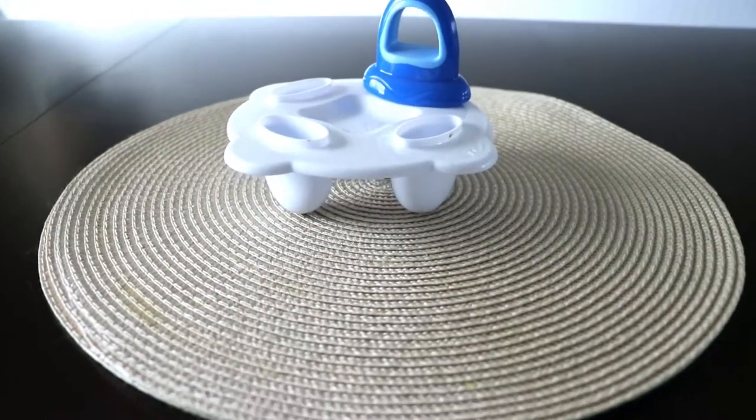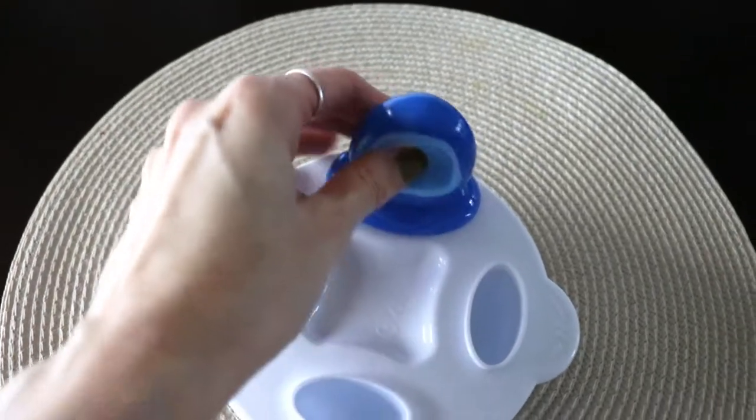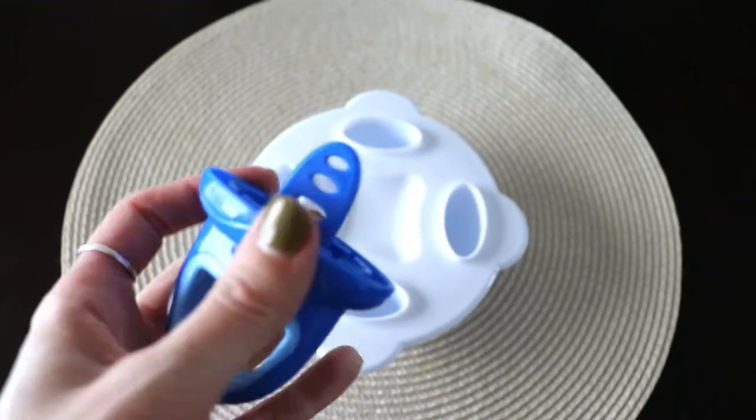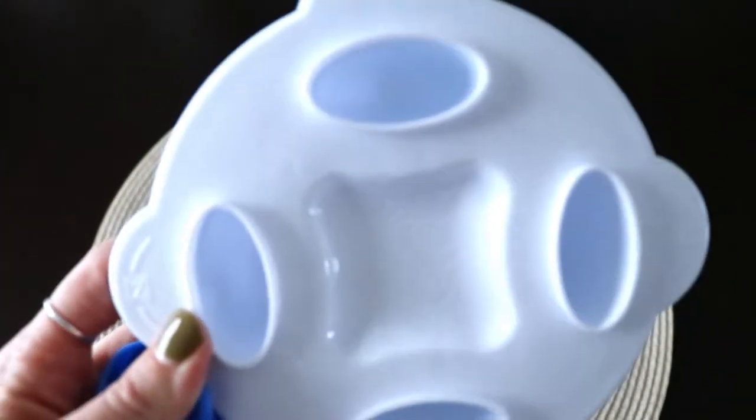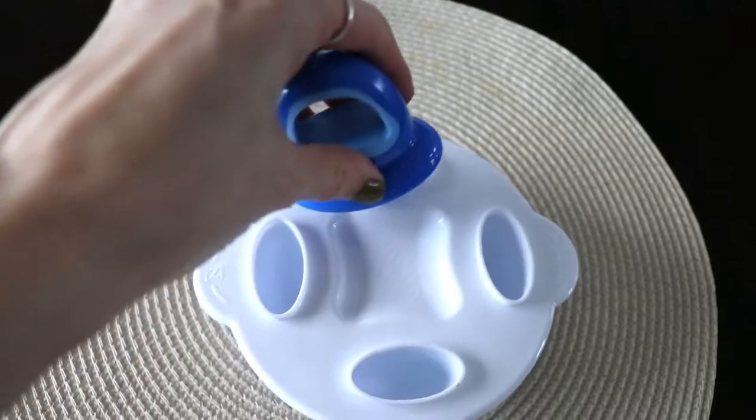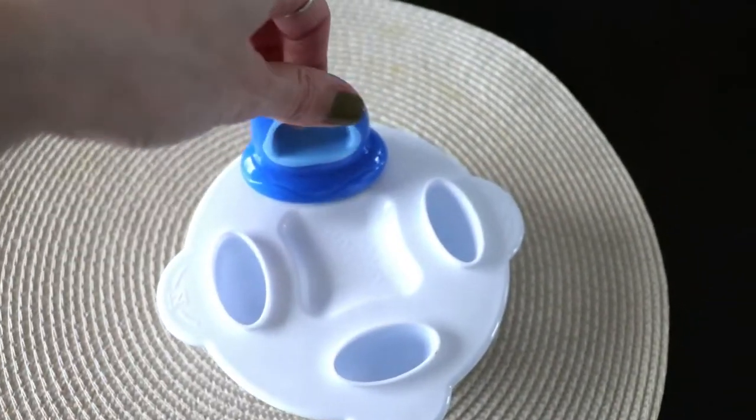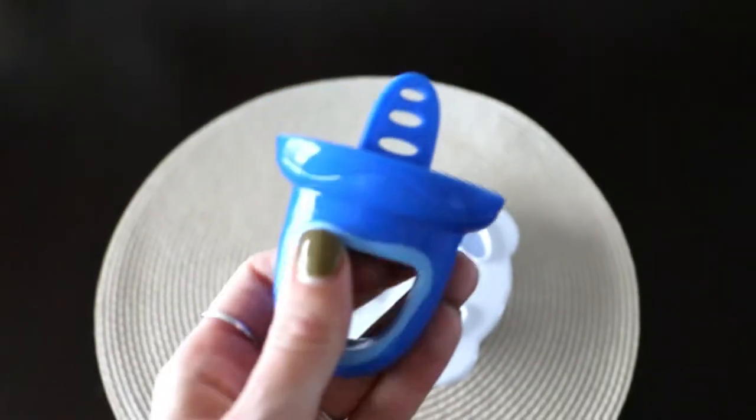Next up is this popsicle maker. So this was a really big hit in the summer. I would actually take and just blend up organic strawberries or blueberries or any kind of fruit and put these into each of the wells. Of course, it does have four popsicles, but I just brought out one, for example. I would stick that in there and freeze it. And then once it's frozen, pull it out. And it's the perfect size for baby to have a popsicle and they can grab the little handle.